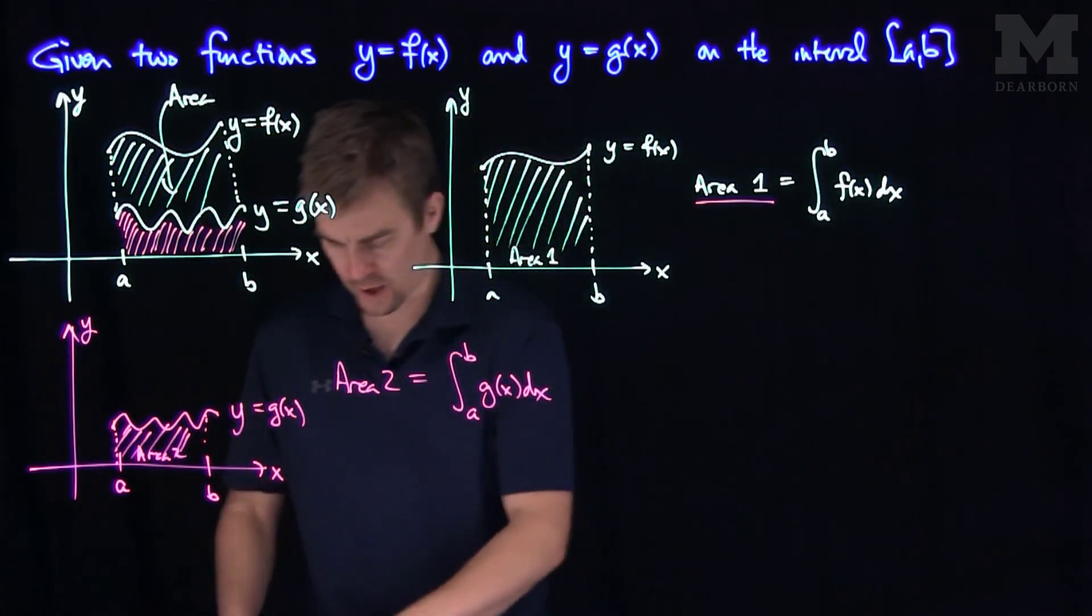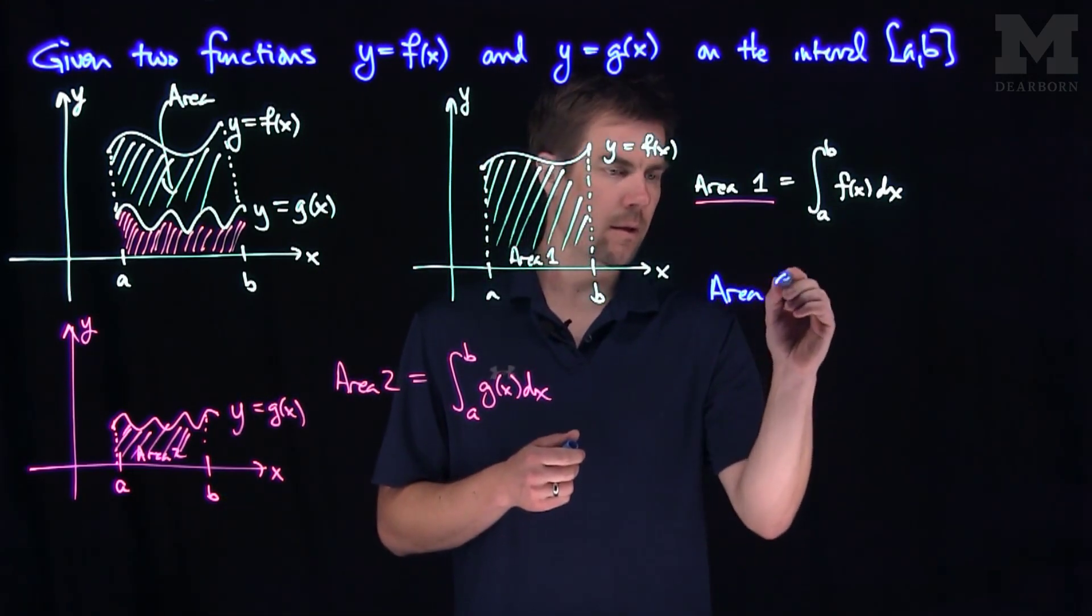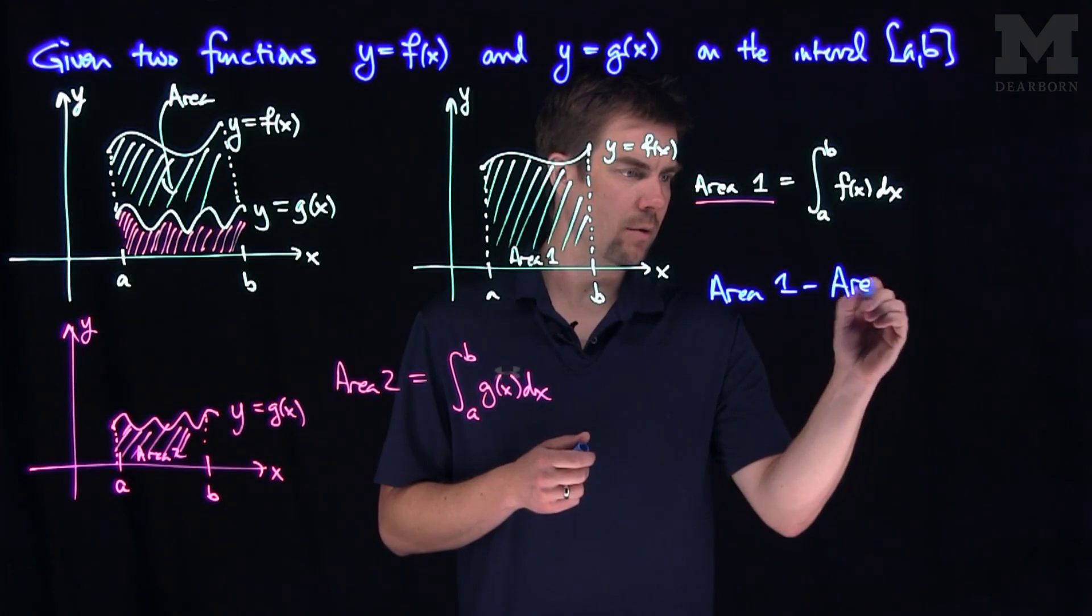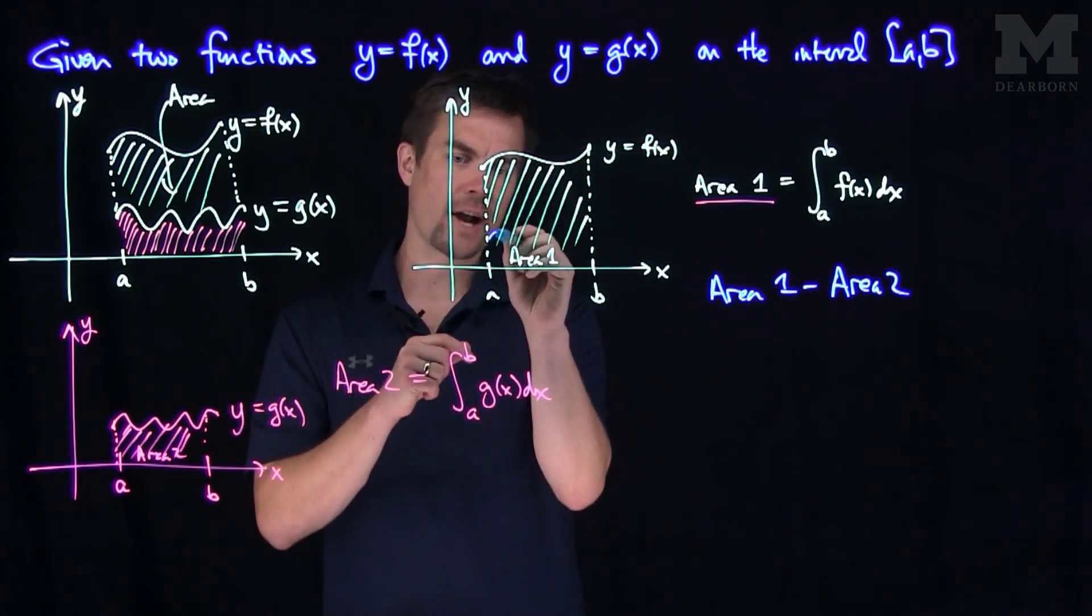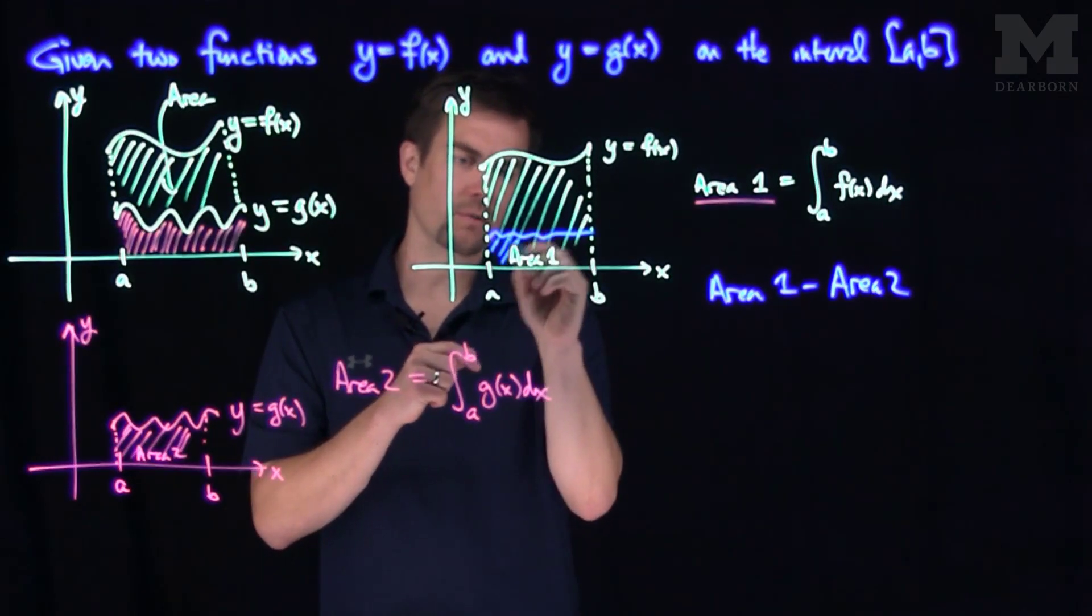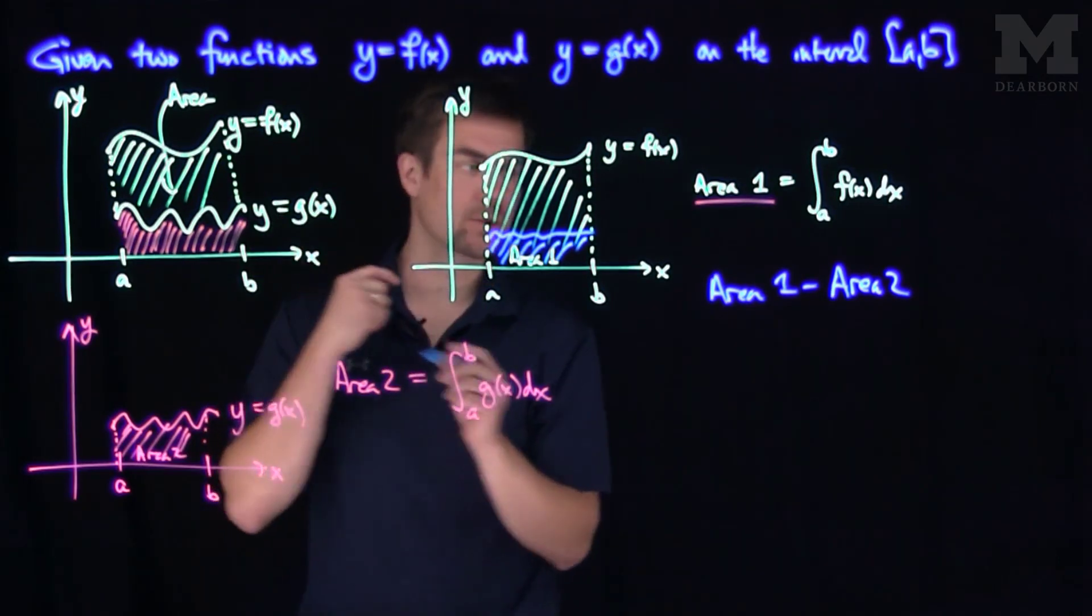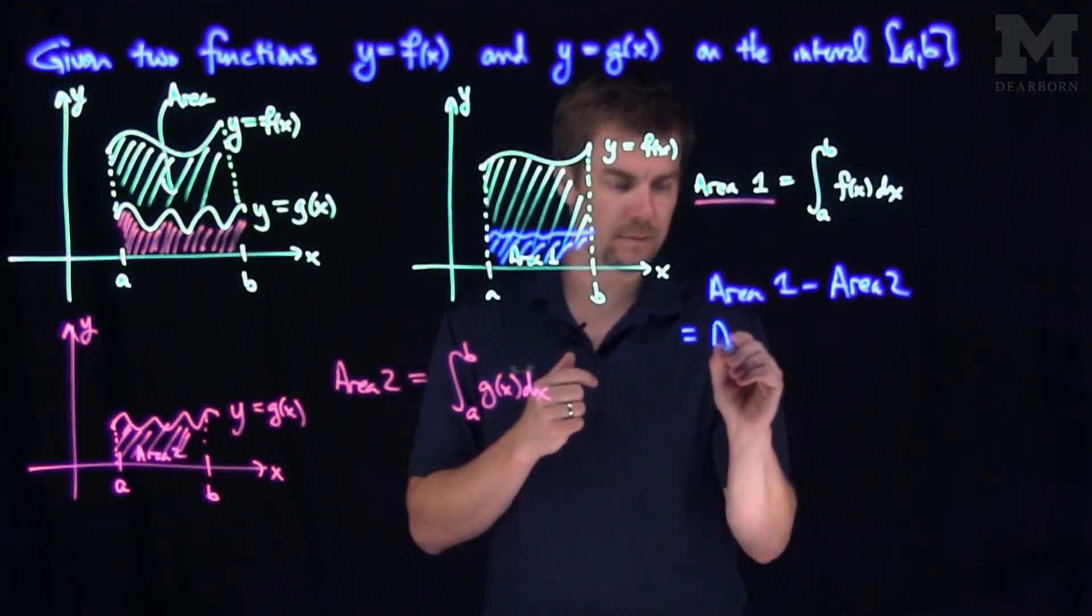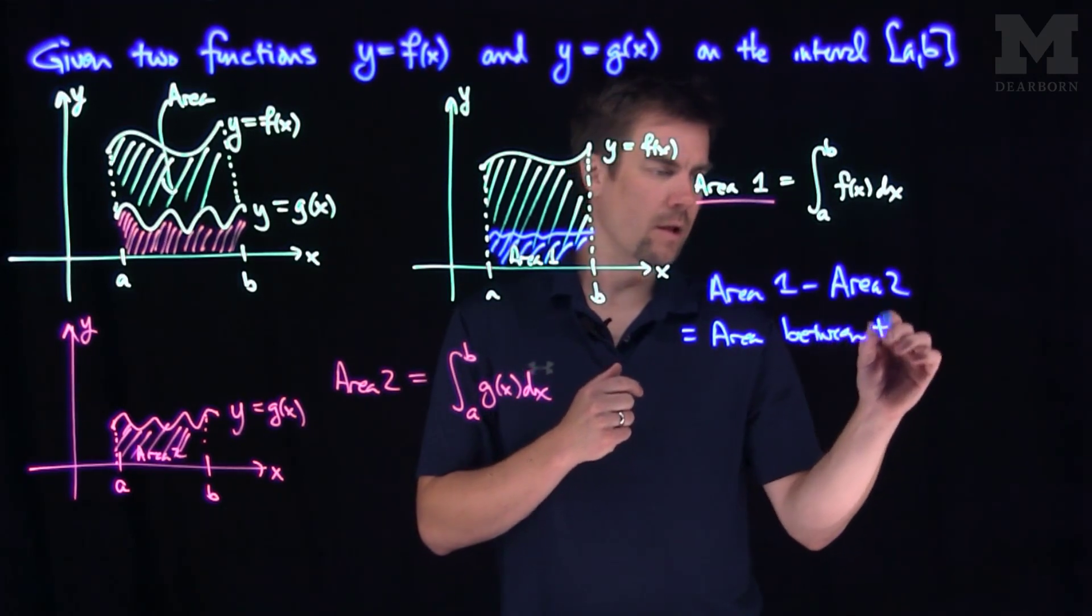so if we do area number one minus area number two, what that will do is that will take area number one right over here and it will subtract off this little portion over here which would be area two, and that gives us exactly the area in between those two curves. So this will be the area between the curves.